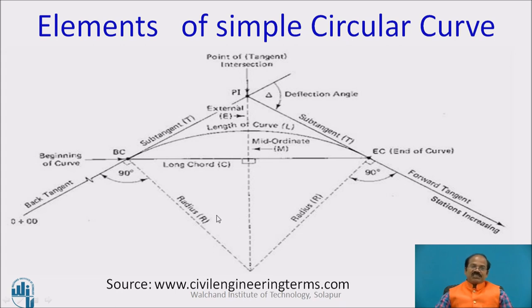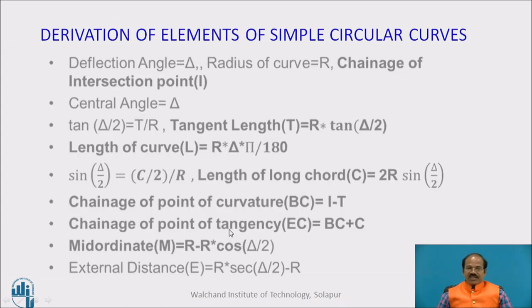While calculating the tangent length, which is BC to PI, again we can take the help of this particular angle delta/2. So tan(delta/2) equals T divided by R, and hence we can say T equals R tan(delta/2). The length of the curve can be calculated as R delta π/180, and thus we can derive these many components.